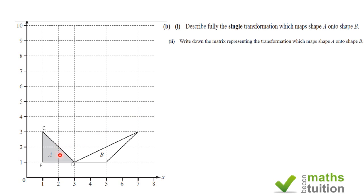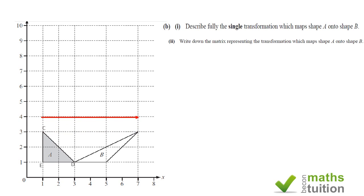Looking at this, purely by common sense, this cannot be a stretch, because the areas are the same. Checking shape B: height is 2 and width is 2, so area = 2×2÷2 = 2. The area of object A is also 2. Since the areas are equal, this suggests the transformation is a shear.